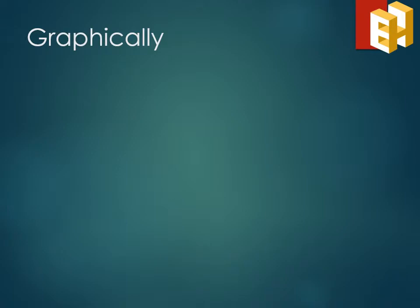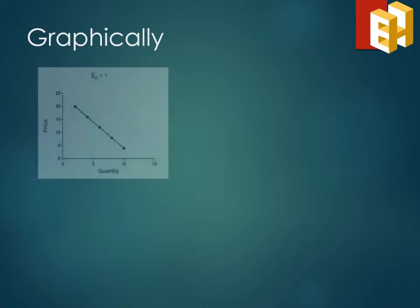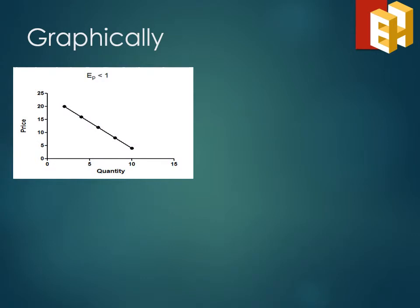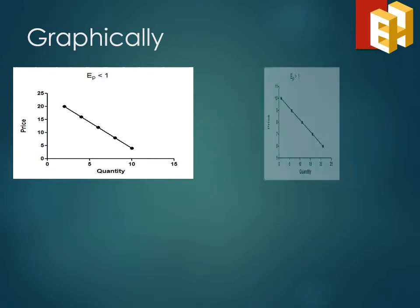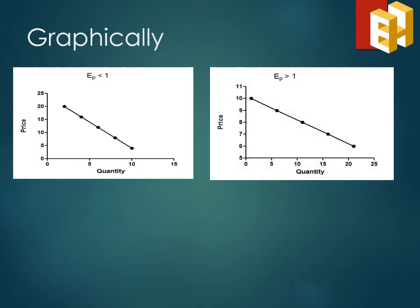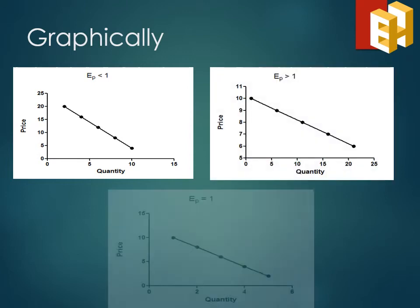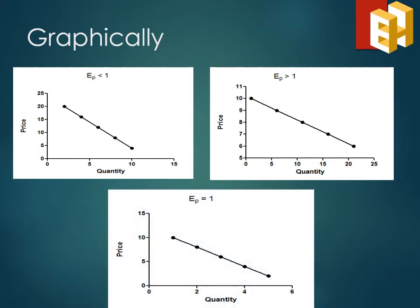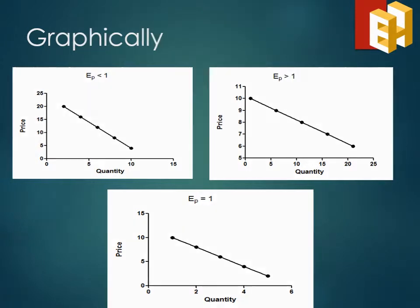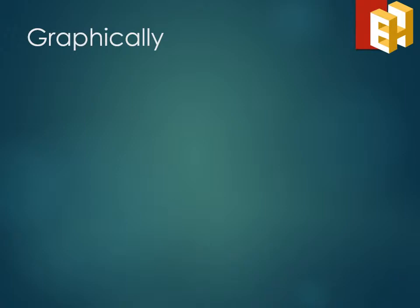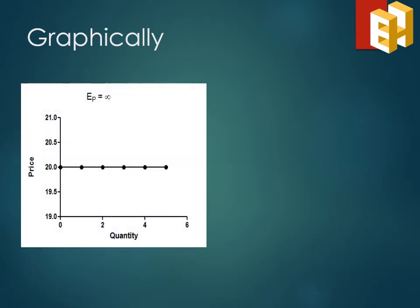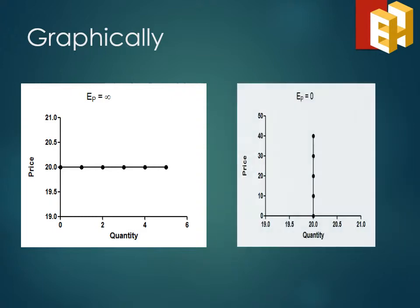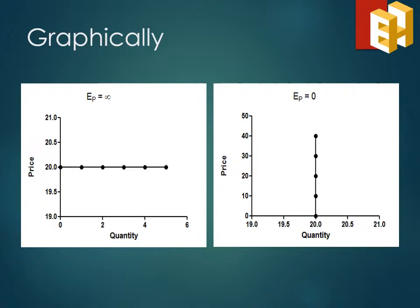Graphically, we can express our degrees as: elasticity less than one, which shows a steeper slope for the demand curve; elasticity greater than one, which is comparatively flatter; and elasticity equal to one, which is generally represented using the rectangular hyperbola. Representing our two special cases graphically, elasticity equal to infinity is shown as a horizontal straight line parallel to the x-axis, and elasticity equal to zero is represented as a vertical straight line parallel to the y-axis.